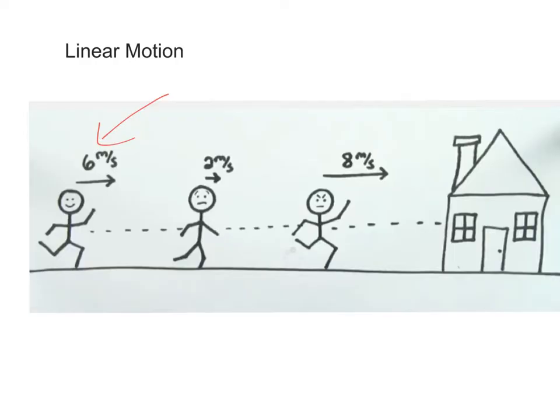What do we call each of these measurements? Well, if I just tell you that someone is going six meters per second, that's their speed. If I add in that they're traveling six meters per second in this direction, that's velocity.